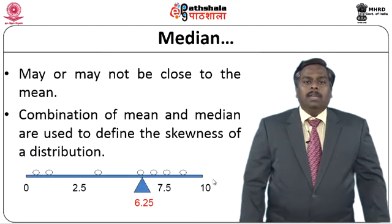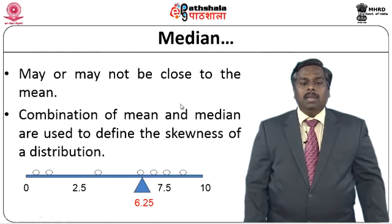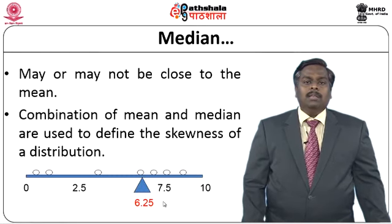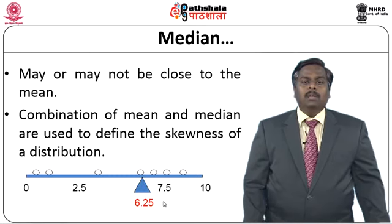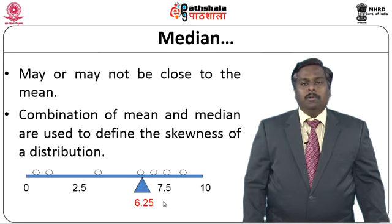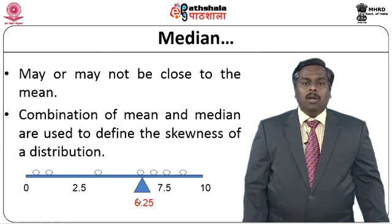Here we can take an example where the median is 6.5. In analysis, we can combine both mean and median to define to what extent the data is skewed or to what extent the distribution is skewed, and accordingly choose a specific type of analysis to derive an outcome.